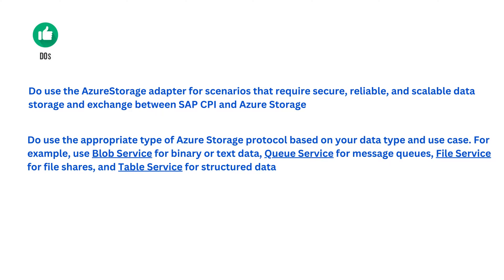When using the Azure Storage Adapter, you need to make sure you are using the right service on the Azure cloud side. In Azure storage, we have four different types of services: blob storage, table storage, queue storage, and file storage. When you want to work with binary files, use blob storage. When you want to work with queues, use the queue service. When you want to work with structured data, use the table service. When you want to work with files, use the Azure Storage file service. Based on the client's need and integration requirement, you have to use the appropriate service.